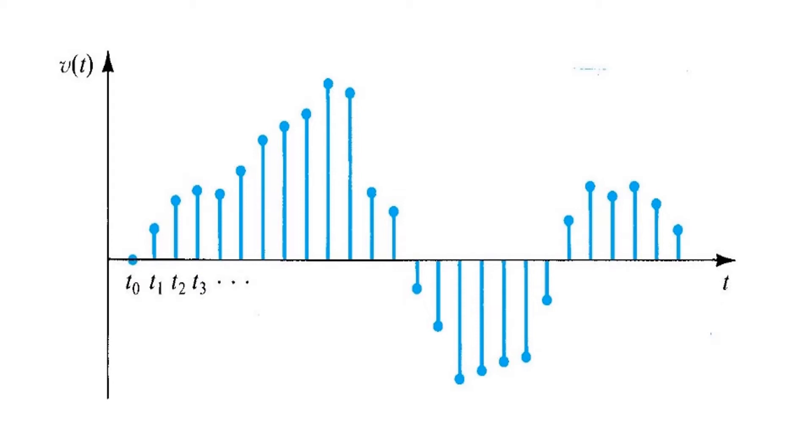So in order to represent the signal digitally, we have to quantize or round the values taken at every discrete time point to the nearest value that can be represented using the number of bits we have available.